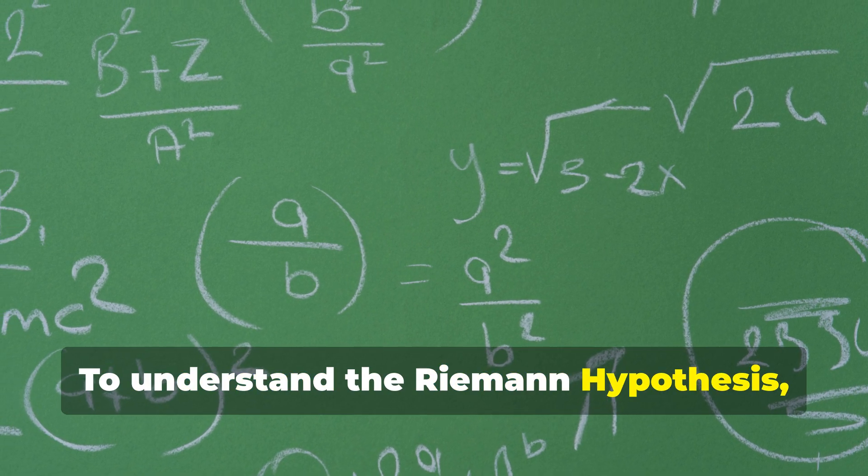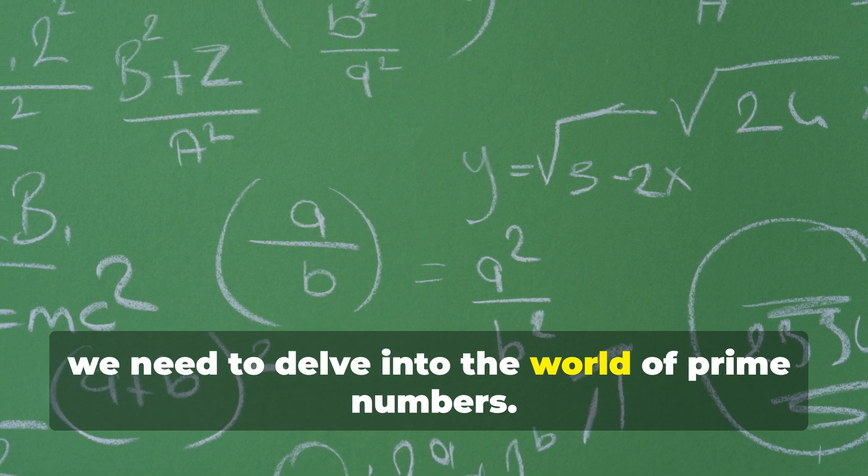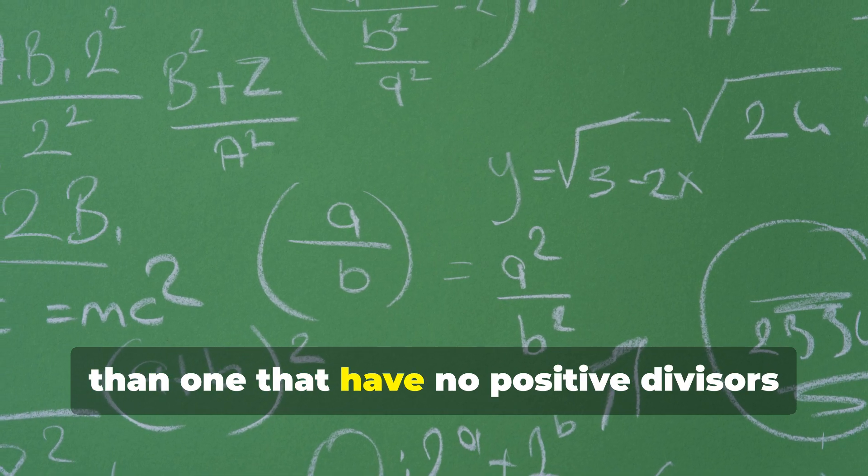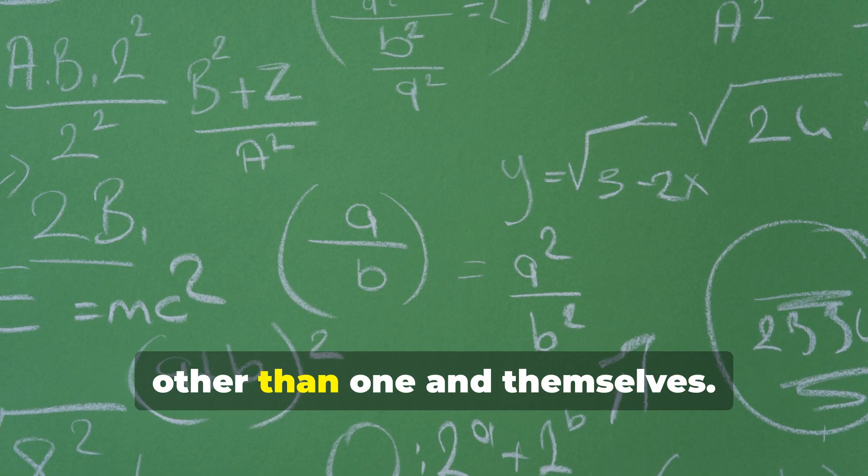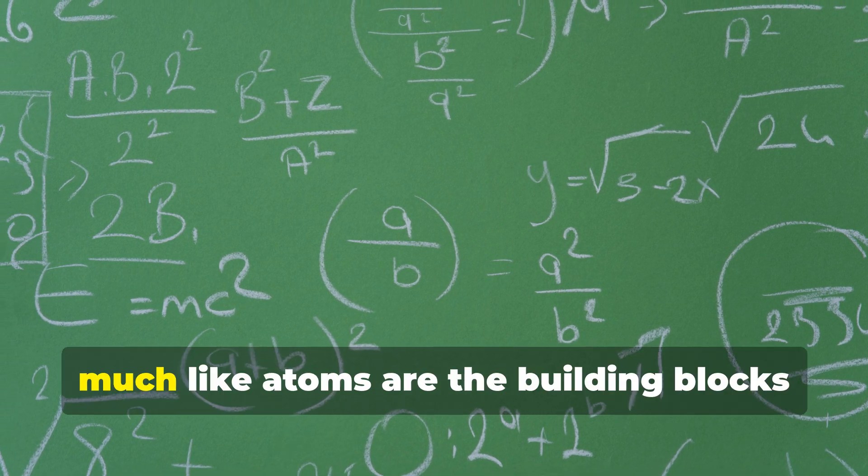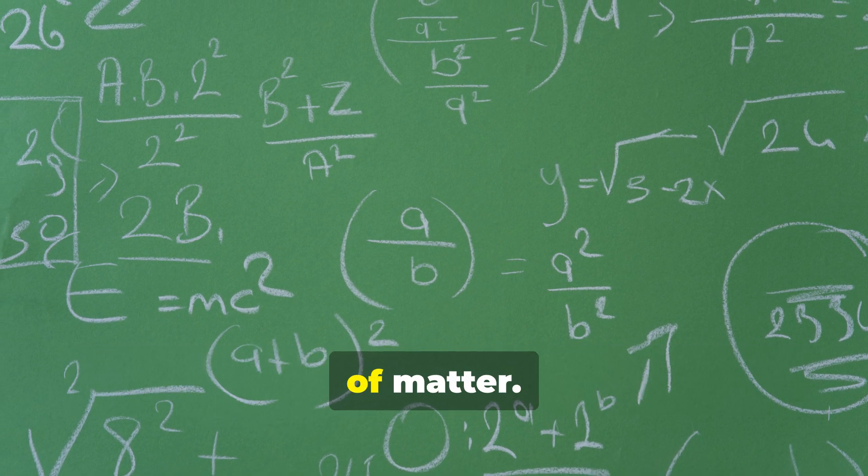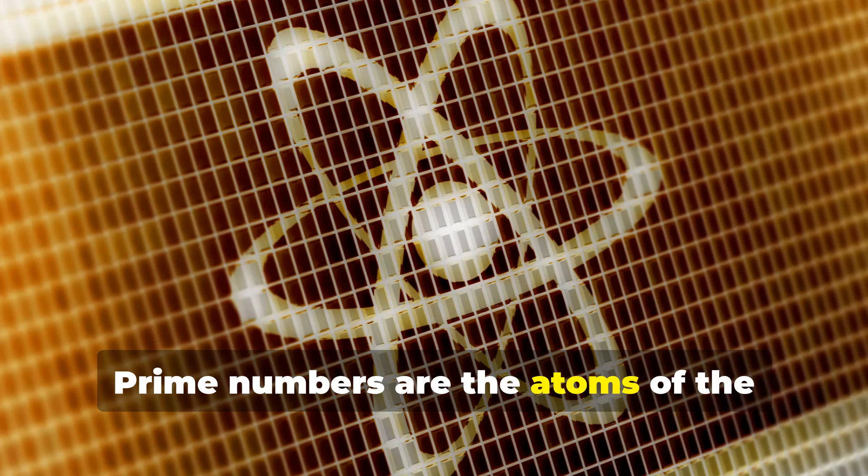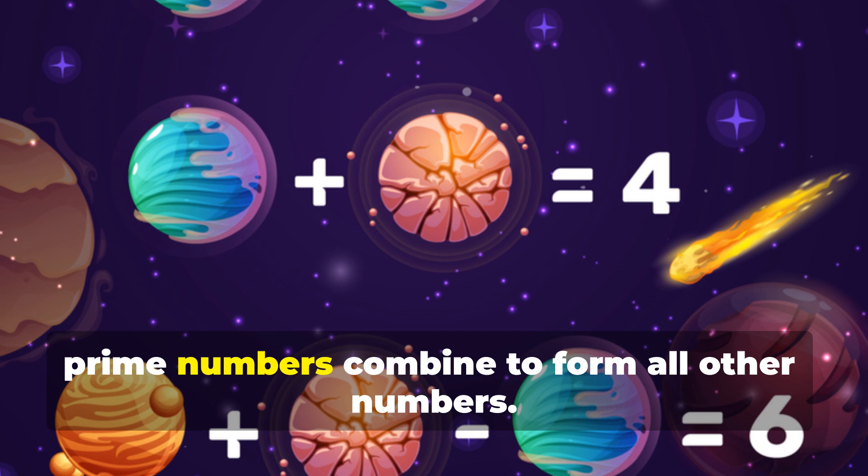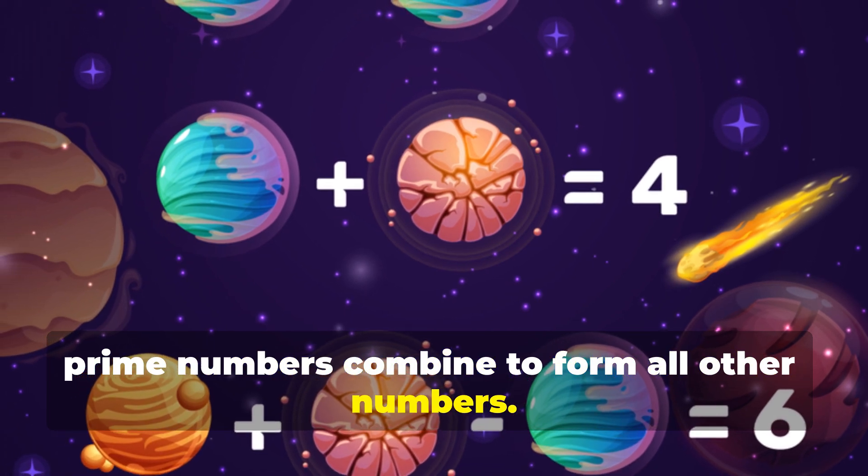To understand the Riemann Hypothesis, we need to delve into the world of prime numbers. Prime numbers are those numbers greater than one that have no positive divisors other than one and themselves. They are the building blocks of the number system, much like atoms are the building blocks of matter. Just as atoms combine to form molecules, prime numbers combine to form all other numbers.